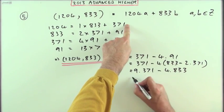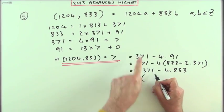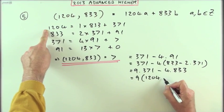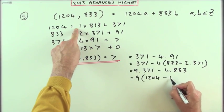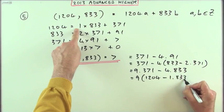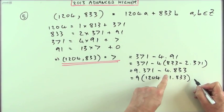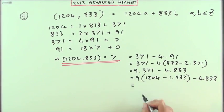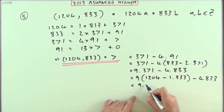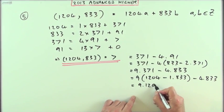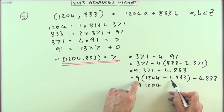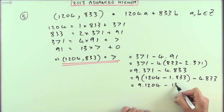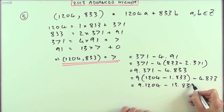Now I can move up to the top line and replace that 371. That'll be 1204 minus 1 times 833, minus the 4 times 833. Then finally tidying that up: I've got 9 times 1204, and that's take away 9 plus another 4, which is minus 13 times 833.